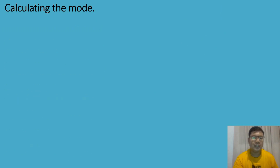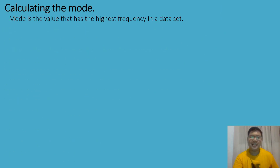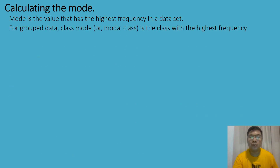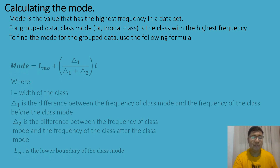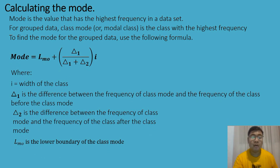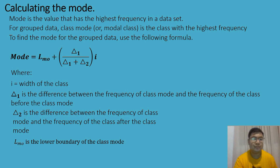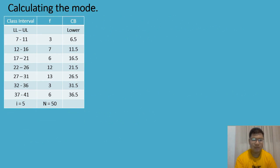Next, we'll be calculating the mode. The mode is the value that has the highest frequency in a data set. For grouped data, the modal class is the class with the highest frequency. To find the mode for the grouped data, we use the following formula: mode is equal to the lower class boundary of the modal class plus the quantity delta sub 1, all over delta sub 1 plus delta sub 2, times the class width. Delta sub 1 is the difference between the frequency of the modal class and the frequency of the class before it. Delta sub 2 is the difference between the frequency of the modal class and the frequency of the class after it.